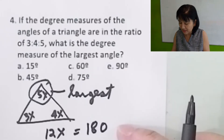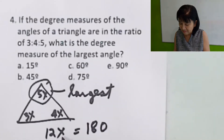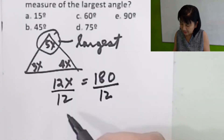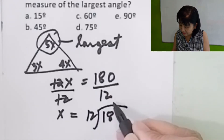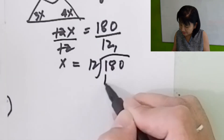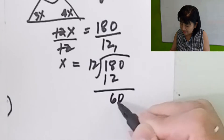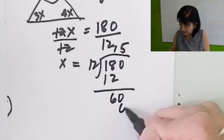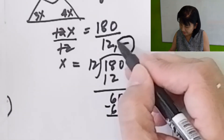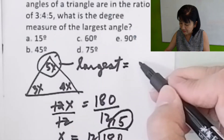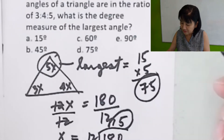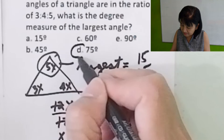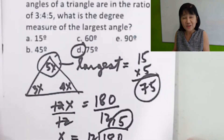This equation works because the sum of angles of a triangle in geometry equals 180. Divide both sides by 12 to solve for x. X equals 180 divided by 12, which is 15. The largest angle is 5x, so 15 times 5 is 75. The largest angle is 75 degrees for problem number 4.